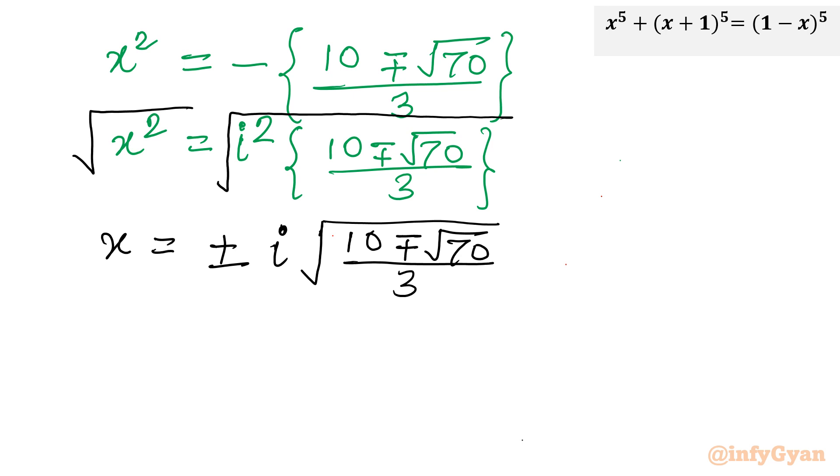So you can see, 4 solutions are complex and one is real. So real solution is x is equal to 0. And complex solution, it is plus minus i square root 10 plus minus root 70 over 3. So here we are having 5 solutions.